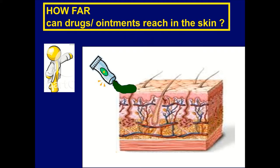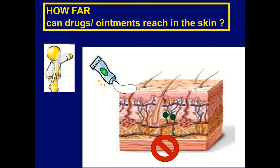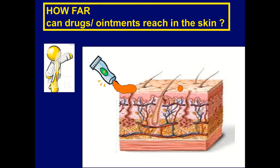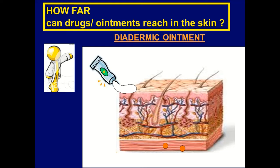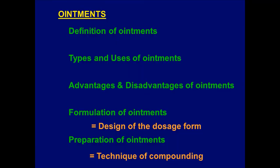If the applied ointment contains a drug that, when released, can go through the skin reaching the dermis layer but no further, this is called an endodermic ointment. If the incorporated drug can go deeply into the skin and reach deeper layers, this ointment is called a diadermic ointment. So the old classification of ointments depends on how far the incorporated drug reaches, classifying them into epidermic, endodermic, and diadermic ointments.